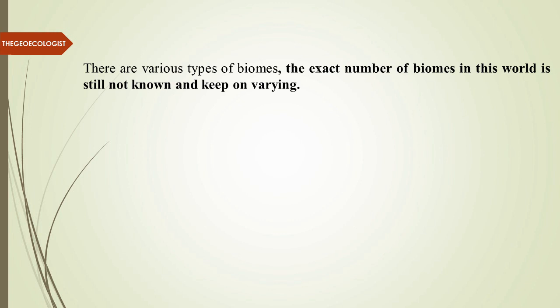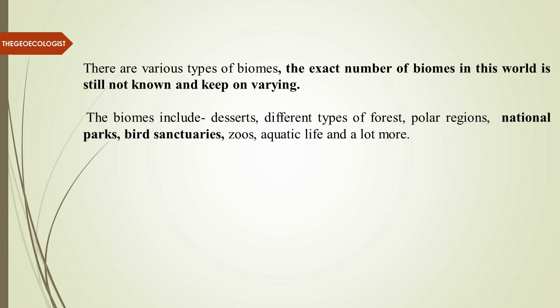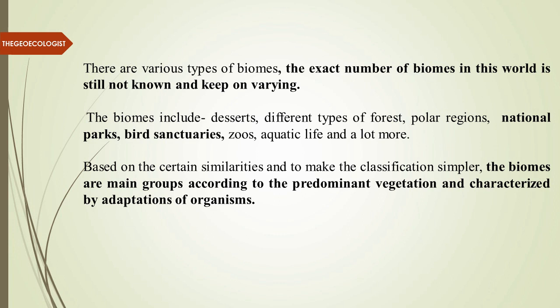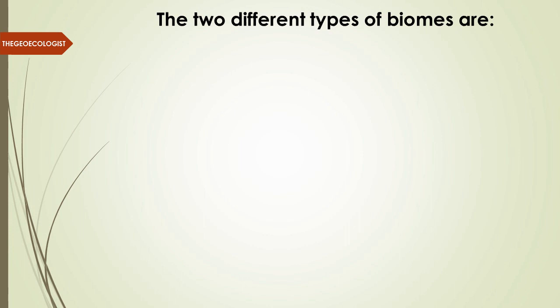The exact number of biomes in this world is still not known — it is still being classified and reclassified. Biomes include deserts, different types of forests, polar regions, national parks, bird sanctuaries, zoos, aquatic life, and so many things — a diversity of things. Based on certain similarities, and to make classification simple to understand, biomes are grouped into main groups according to predominant vegetation and adaptation of organisms. In upcoming lectures, we will discuss adaptations of vegetation, animals, and human beings in different biomes.